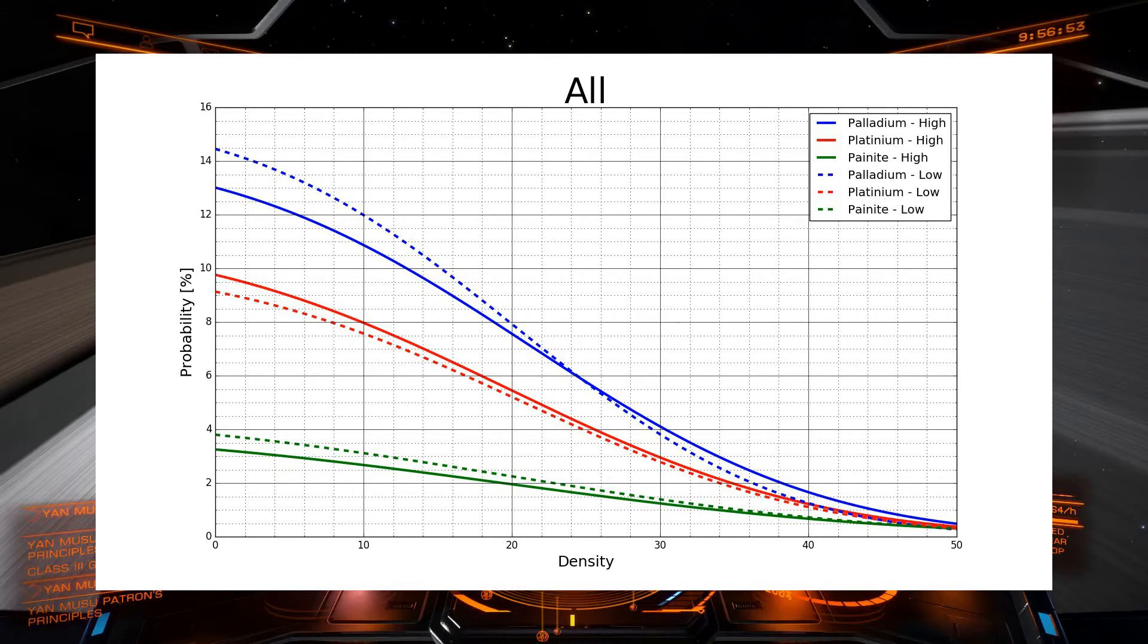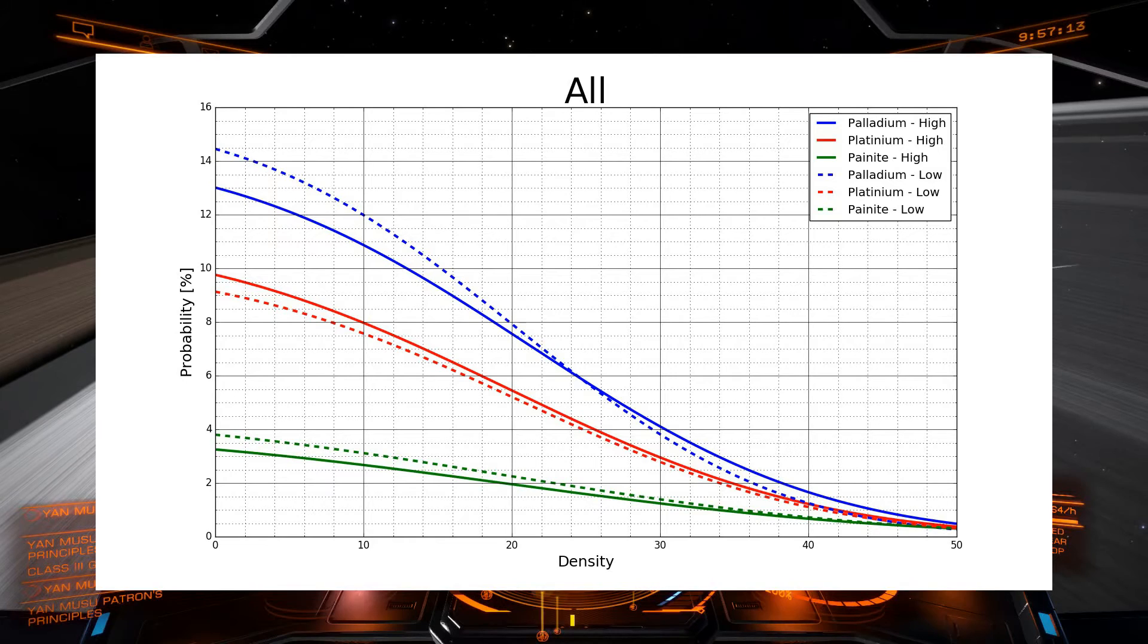So what it looks like to me from these graphs is what you maybe would expect, that for each ring, the probability that a rock contains a certain material is fixed for that specific ring. So the only argument that you should go into a lower density area would be if you're in a large ship and you're having a hard time maneuvering in the high density area, then go into an area where you think the density fits your ship.